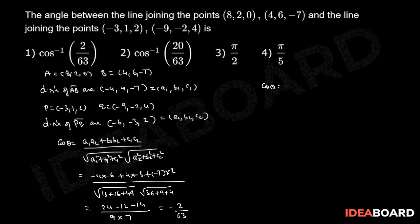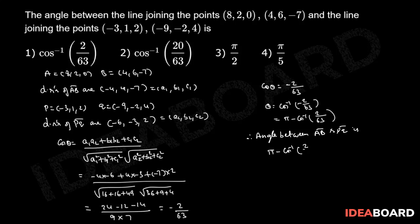Therefore, we have cos theta equals cos inverse (-2/63). That equals pi minus cos inverse (2/63). Since we know that cos inverse of (-x) equals pi minus cos inverse of x. Therefore, angle between AB and PQ is pi minus cos inverse (2/63) or cos inverse (2/63).